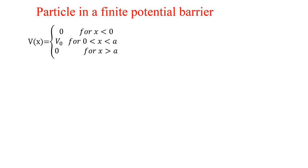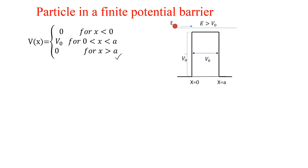Welcome to Virtual Science. In the previous class we discussed the particle in a finite potential barrier. We described Case 1, where the energy of the particle is greater than the potential barrier. Now I am interested to discuss Case 2, which is what happens when the energy of the particle is less than V0.